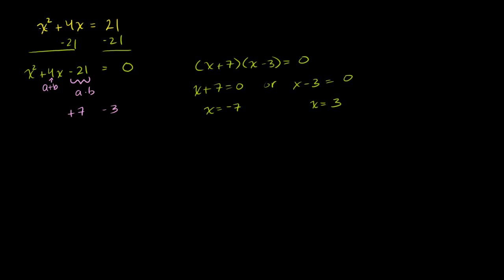We can verify: negative 7 squared is 49, and 4 times negative 7 is negative 28 — and 49 minus 28 does indeed equal 21. For x equals 3: 3 squared is 9, plus 4 times 3 is 12, and 9 plus 12 is indeed 21. Let's do a bunch more examples.